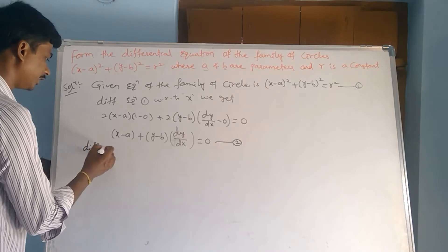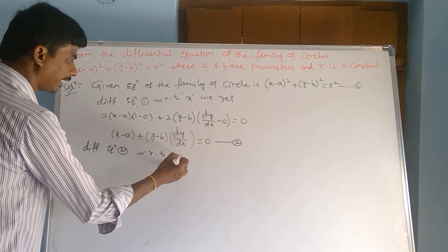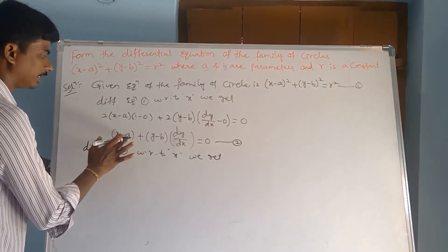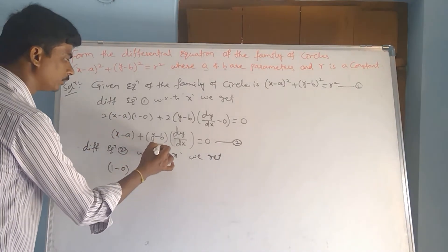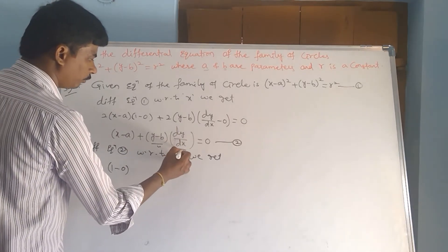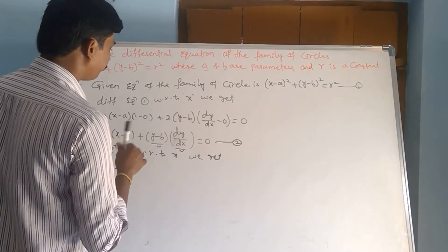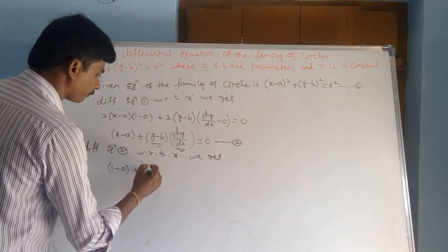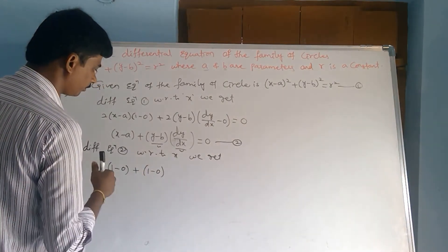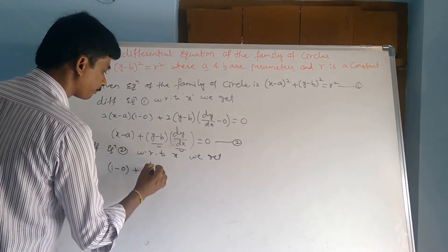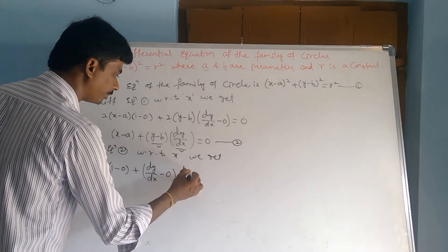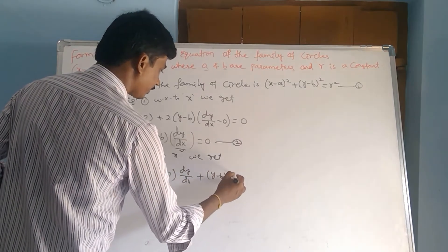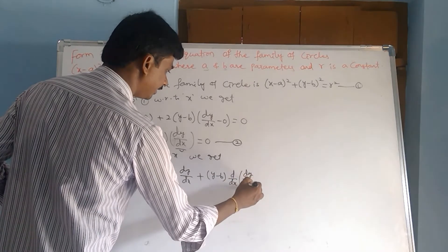Differentiating equation 2 with respect to x, we get. The derivative of (x minus a) w.r.t. x is 1. Now (y minus b) times dy/dx is a product — u into v — so we apply the product formula. Both functions involve y. Applying u·v: we get 1 minus 0 times dy/dx, dy/dx minus 0 times dy/dx. This is the u derivative. Plus (y minus b) times d²y/dx² equals 0.